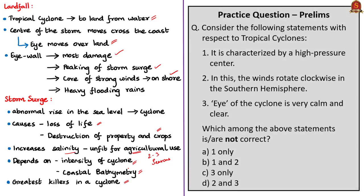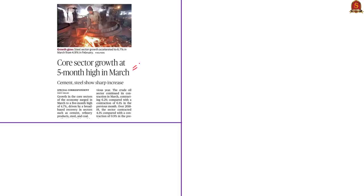With this, we come to the end of the analysis of the cyclone news article. Have a look at the practice prelims question to be discussed at the end of the session. The third news article is 'Core Sector Growth at Five-Month High in March,' discussing the Index of Eight Core Industries for the month of March.